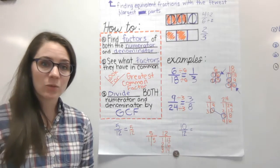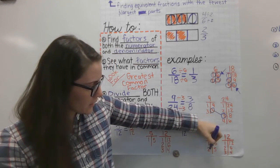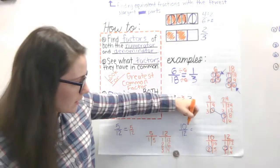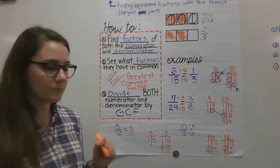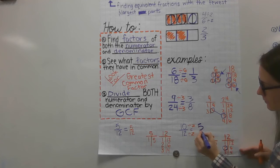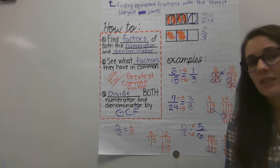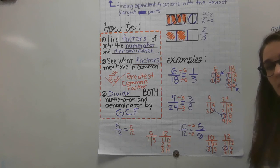Now let's look at 10/12. We found our factors and the greatest factor they have in common is 2. So for every two pieces, I'm going to combine them into 1, dividing numerator and denominator by 2. 10 divided by 2 is 5, and 12 divided by 2 is 6. Looking at your factor pairs can help you find the new fraction. So that is simplifying fractions. If you have any questions, please let me know, make sure you have your notes written in your notebook, and I'll see you in math class.